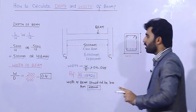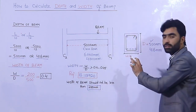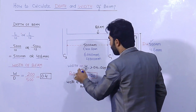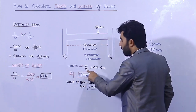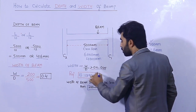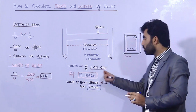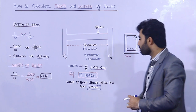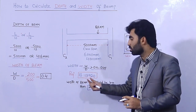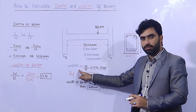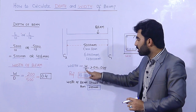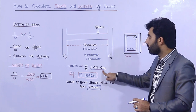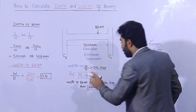Now, what should be the width of the beam? To find the width, remember that the ratio of width to depth (W/D) should be between 0.4 and 0.45, as per IS code reference IS 13920. The width of the beam should not be less than 200mm.